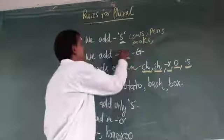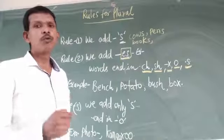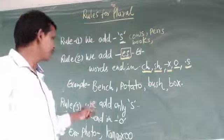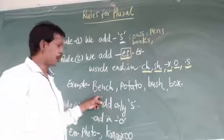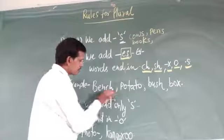The example: bench. You can see here bench ending word is CH. Ending with CH, so we add 'es' here: benches.